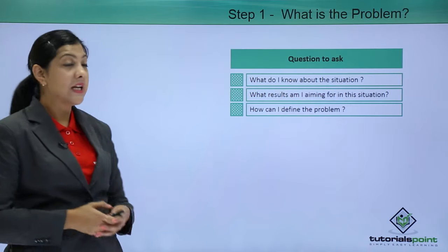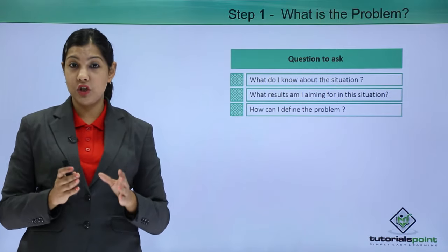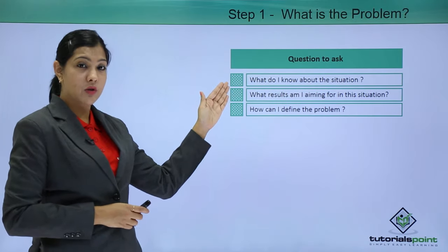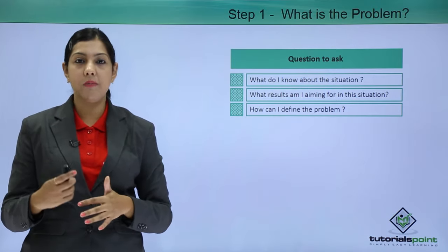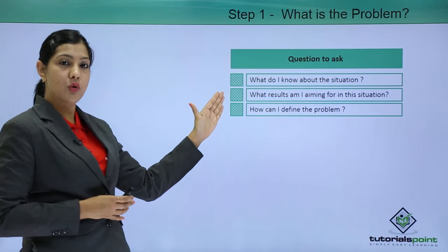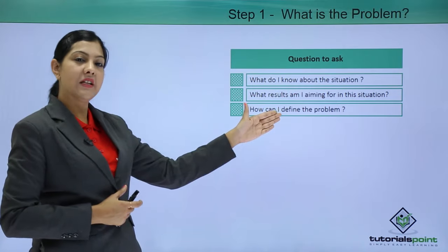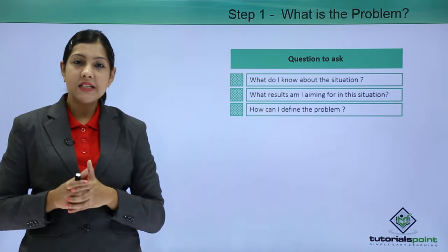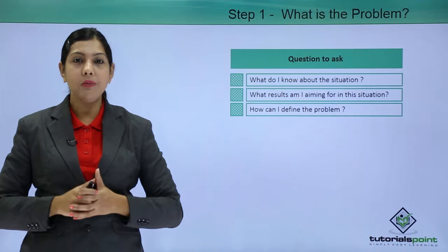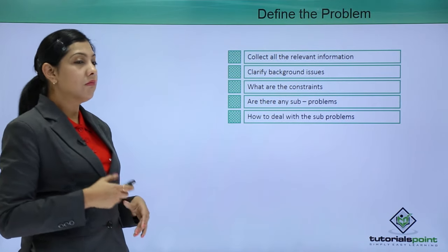Step one: what exactly is the problem? Certain questions you need to ask yourself at this stage — what do I know about this particular situation? What results am I aiming for? What is the end goal if this problem is solved? And how can I define the problem? Defining problems is not always easy — you might think of a problem in your head, but when you write it down, the problem doesn't really exist. It's all in your mind.